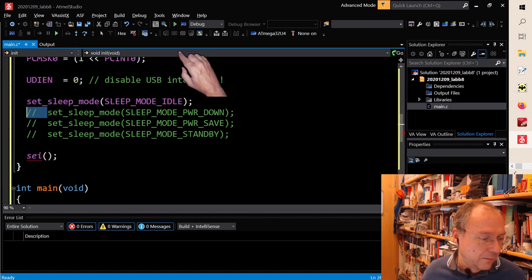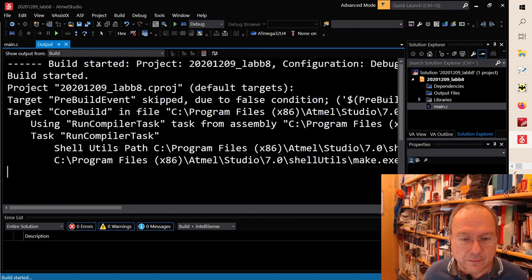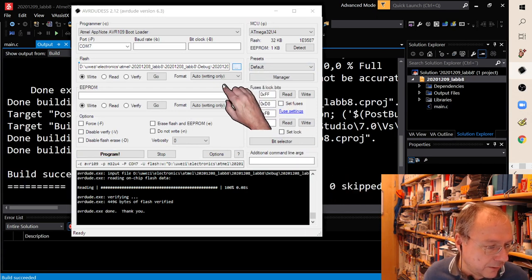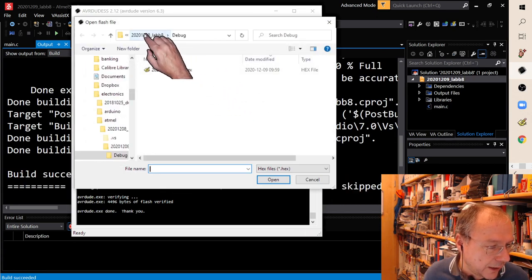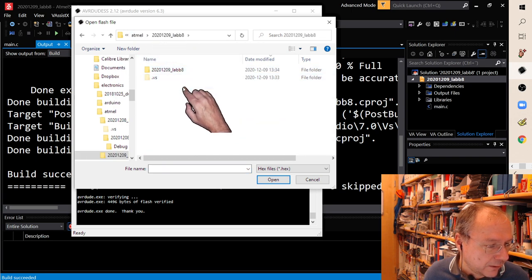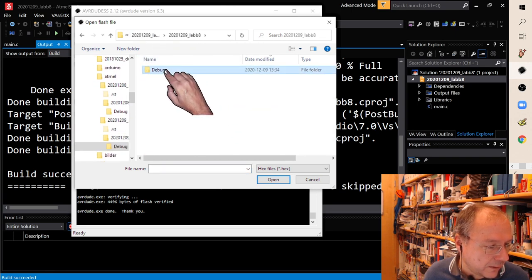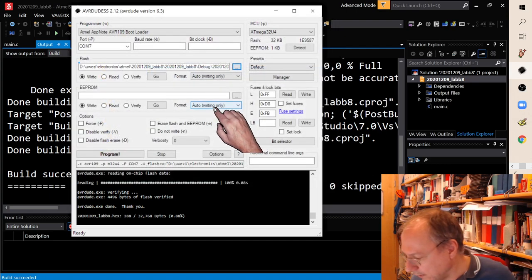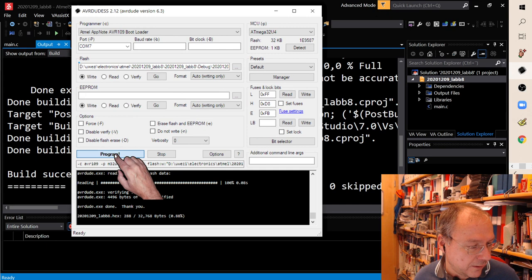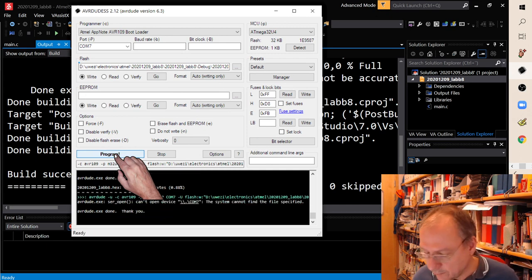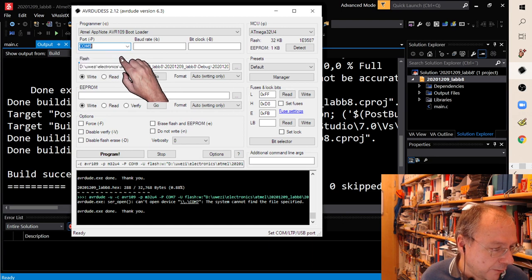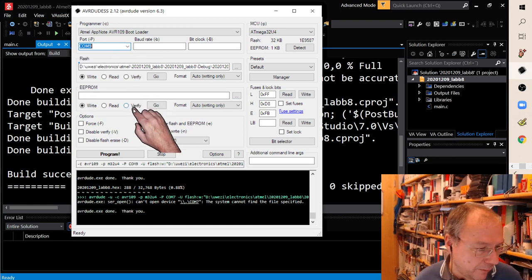I compile the code and I have to find the new hex file because I started a new project. Here's the hex file. I have to press the right button. Program. Oops, it's obviously now COM9 of course, why shouldn't it be COM9 this time.